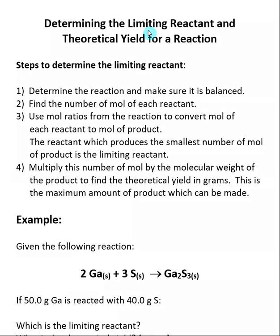Now we're going to take a look at what's called a limiting reactant problem. During this type of problem, what we want to do is, for a given reaction, determine what is the limiting reactant, and then determine the theoretical yield for a reaction. Theoretical yield just means how much of the product we can make.